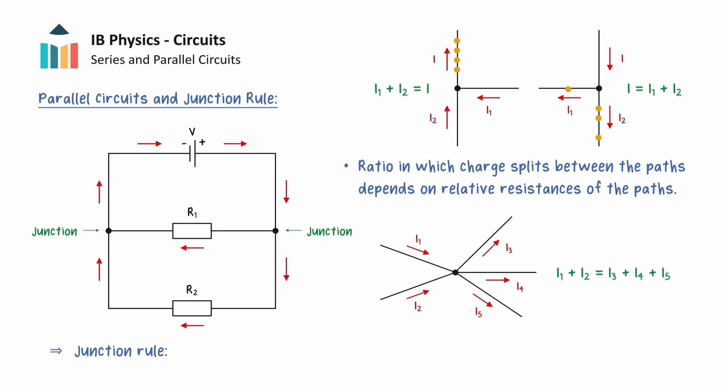The junction rule states that the sum of the currents into a junction is equal to the sum of the currents leaving the junction, and is the consequence of conservation of charge.